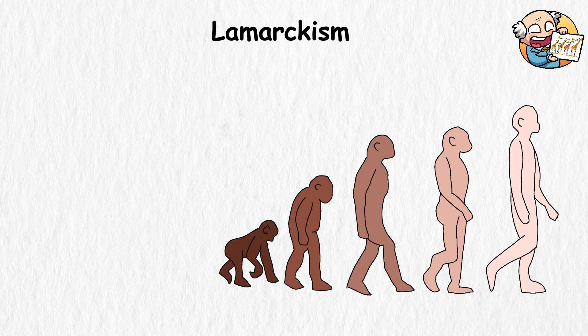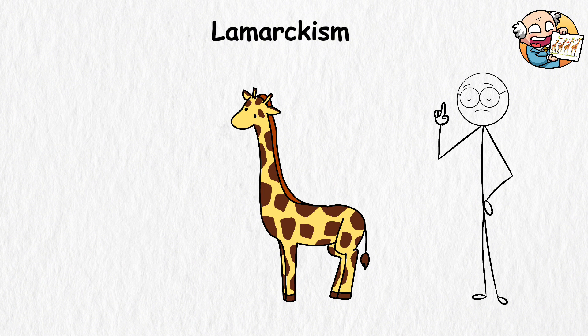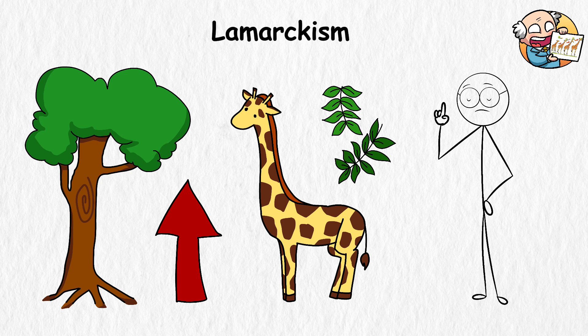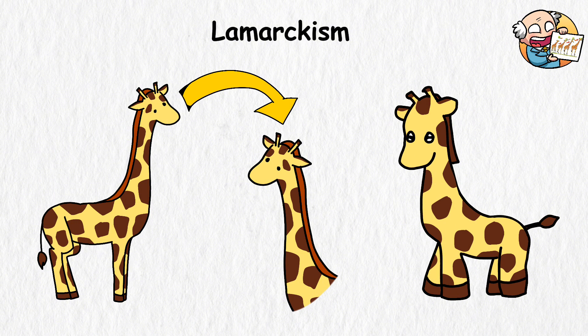That's basically what Lamarckism is all about. This theory of evolution revolves around the two main principles of use and disuse and the inheritance of acquired traits. For example, because a giraffe lives on a diet of leaves that grow high up in the trees, it relies heavily on its long neck. According to Lamarckism, this giraffe will pass its long neck on to the next generation.